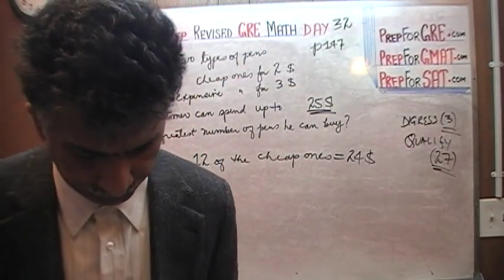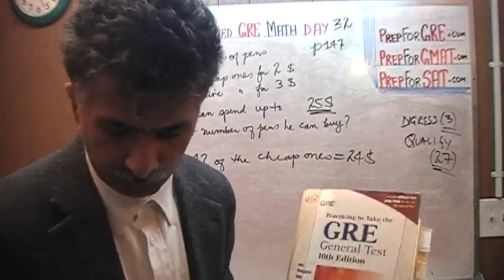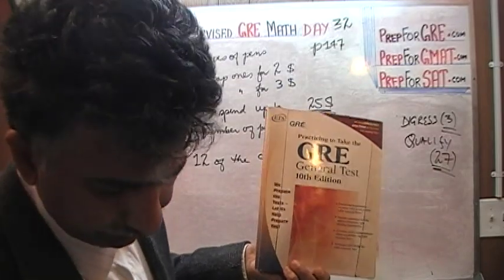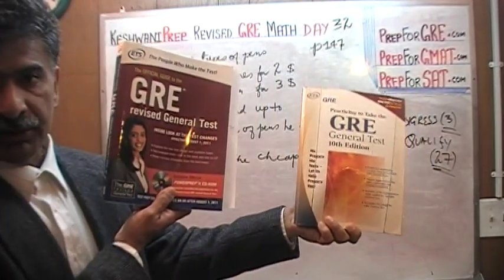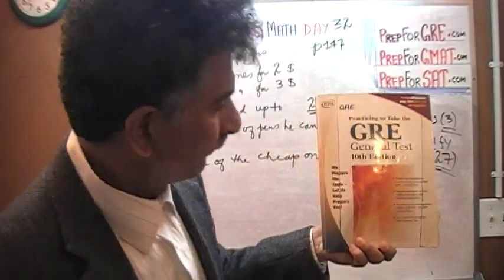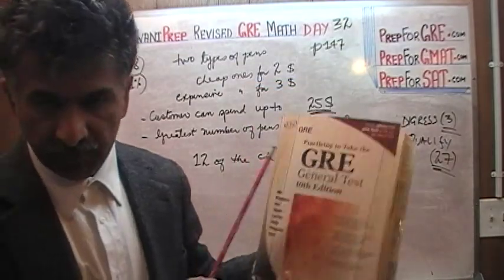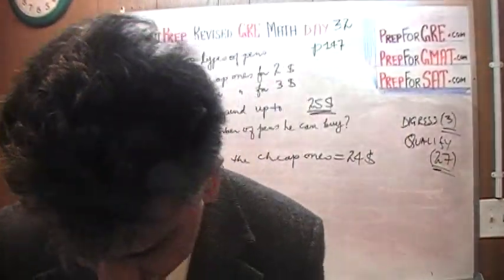Now here is what I am going to do. If you happen to have this book that I am holding in my hand, if you happen to own it, this is the old version of the GRE. This is practicing to take the GRE, the 10th edition. If you happen to have this book in front of you, then you will find that on page number...